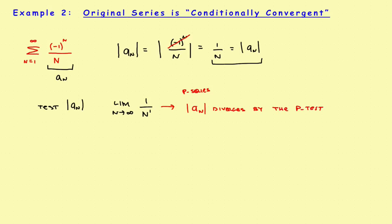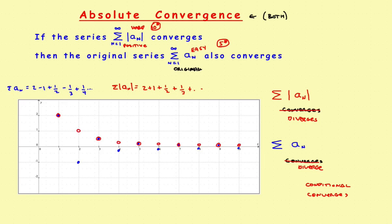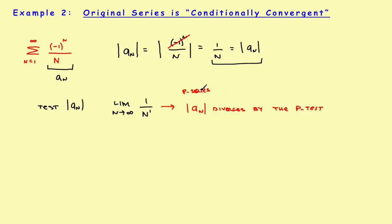Since the absolute value series diverged, I can't draw any conclusions about the original series yet — maybe it converges, maybe it diverges. So I have to move on to a second step and test the original series directly. The original series still has the alternating sign, so I'll use the alternating series test on it.